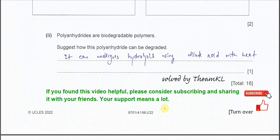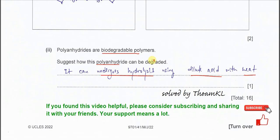Now last part. Polyanhydrides are biodegradable. Suggest how this polyanhydride can be degraded. Just now the question already mentioned, polyanhydride and polyester, they form in a similar way, which means they can be hydrolyzed. When polyester can be hydrolyzed, polyanhydride also can be hydrolyzed or can be degraded because they have the carbonyl group. So you just need to mention they can undergo hydrolysis using dilute acid with heat or reflux. So this is how they can be degraded. Okay, that's all. Thank you.